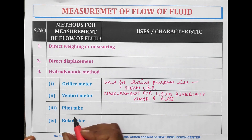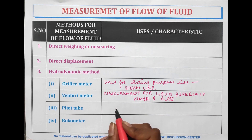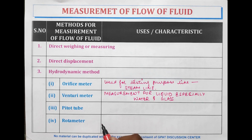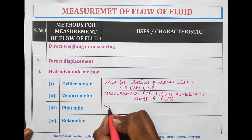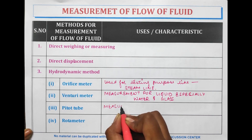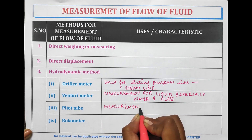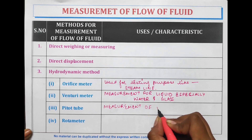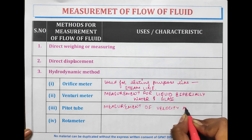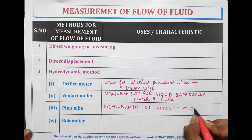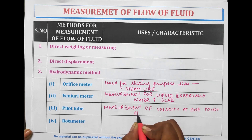The pitot tube is helpful in the measurement of velocity at one point only.